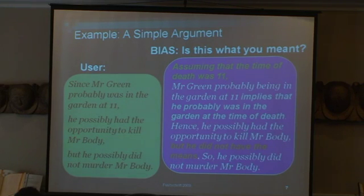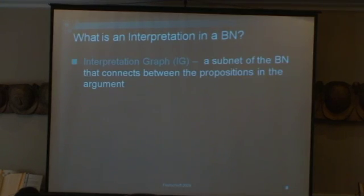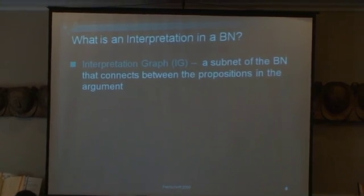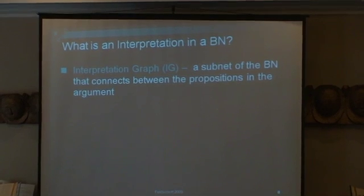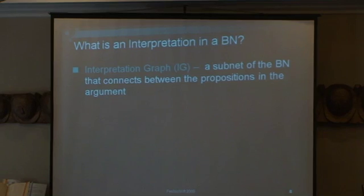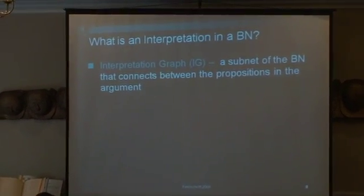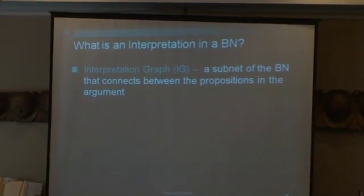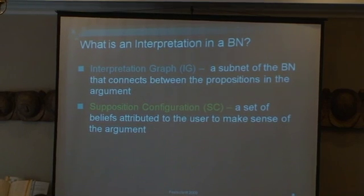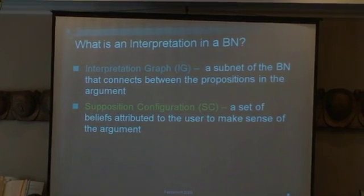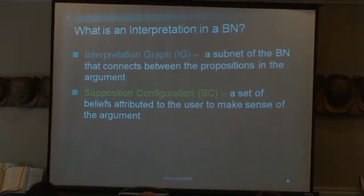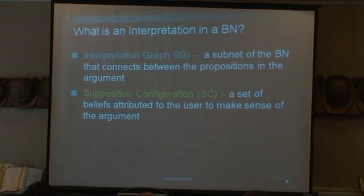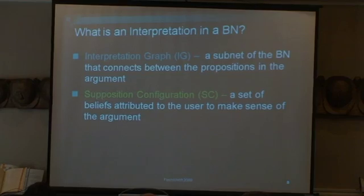So how do we get this? We have three main elements to an interpretation. The first element is an interpretation graph — a subnet of the Bayesian network — in which we want to bridge any gaps that the person may have left. The system will bridge the gaps as best it knows how; it may not necessarily be the bridges intended by the user, but these are the only bridges it has. Second, supposition configuration. People make suppositions that they don't necessarily state. If you want to make sense of what someone is saying, you might say, oh, she's probably supposing this — and then it all falls into place.